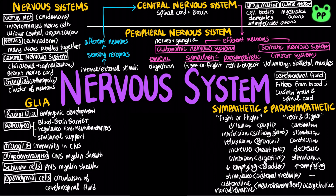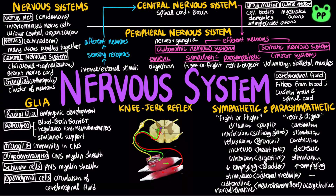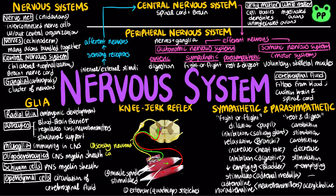The spinal cord conveys information from the brain to the peripheral nervous system. It also produces reflexes independently of the brain. A reflex protects the body by providing a rapid involuntary response to a particular stimulus. For example, in a knee-jerk reflex, the tendon connected to the quadriceps muscle is artificially tapped, which stimulates the muscle spindle to send this information to the spinal cord via sensory neurons through the dorsal root ganglia.